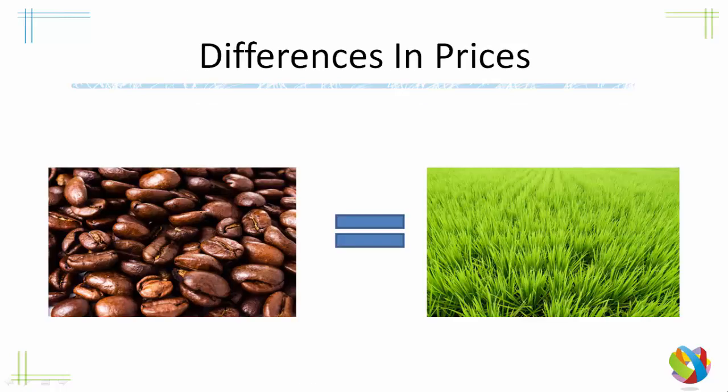We've also assumed away any difference in prices — we've sort of assumed that coffee is equal to rice and valued the same in all countries. But in reality people might value coffee more than rice, or rice more than coffee, and it might differ from one country to another. The theory doesn't take this into account, and perhaps it can't.